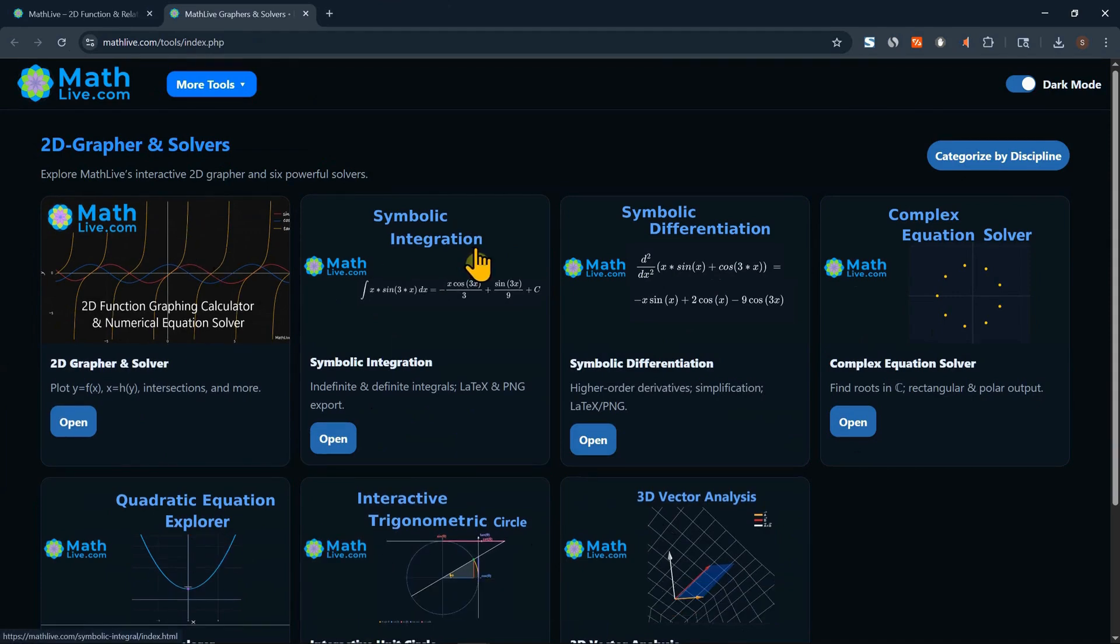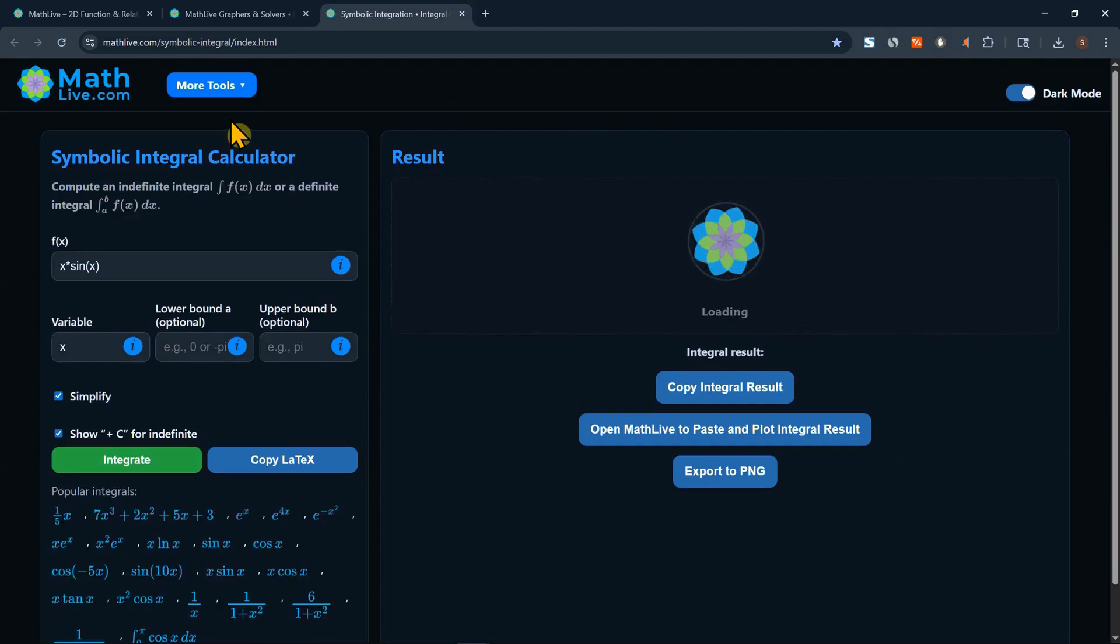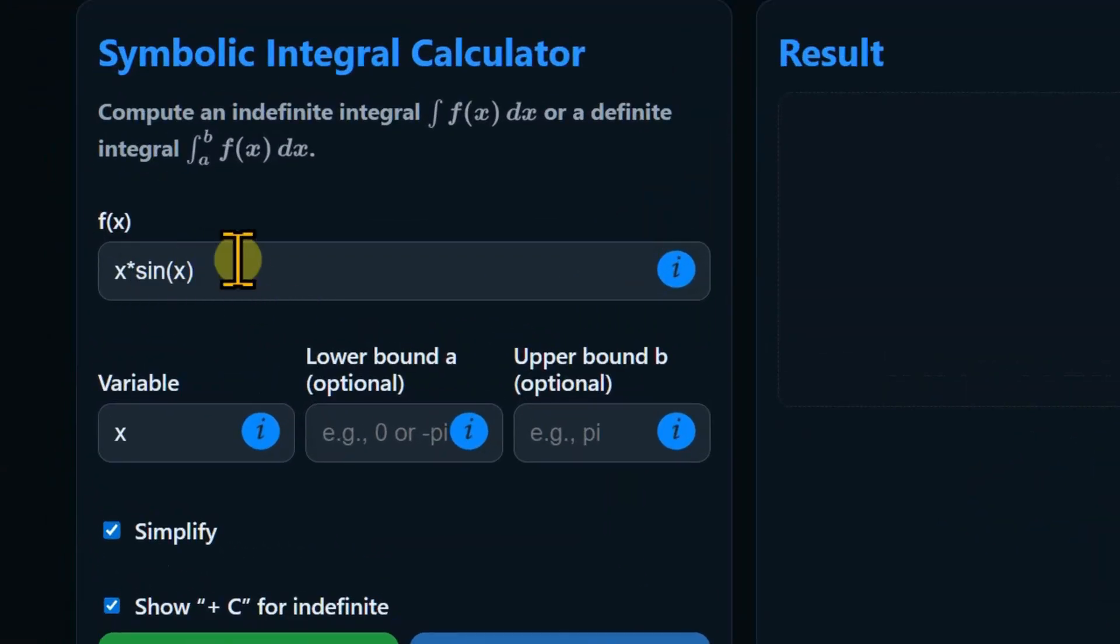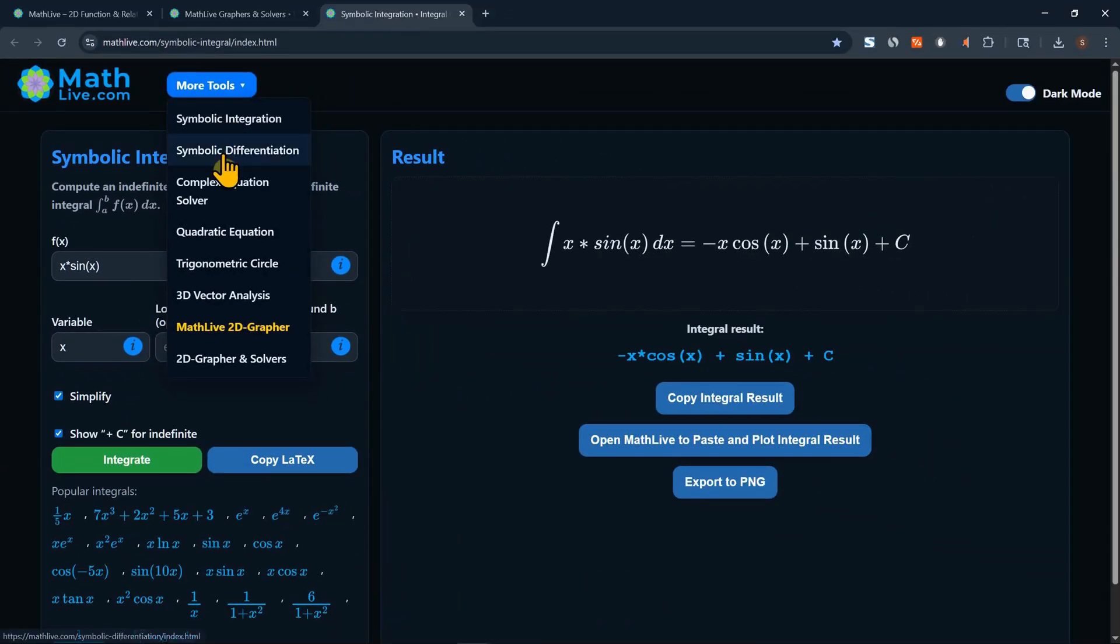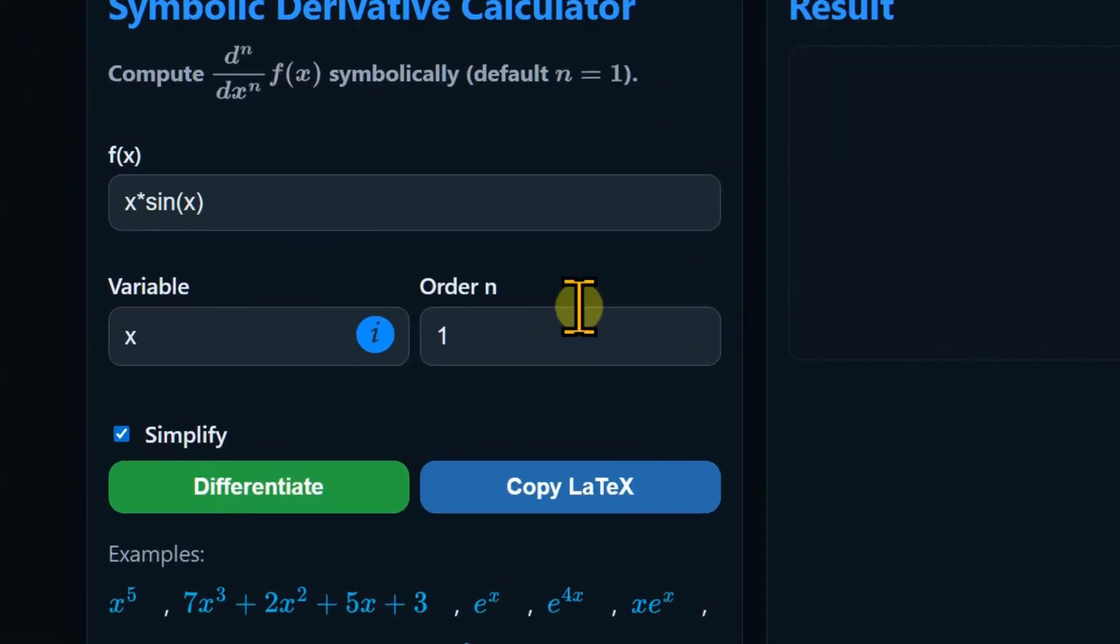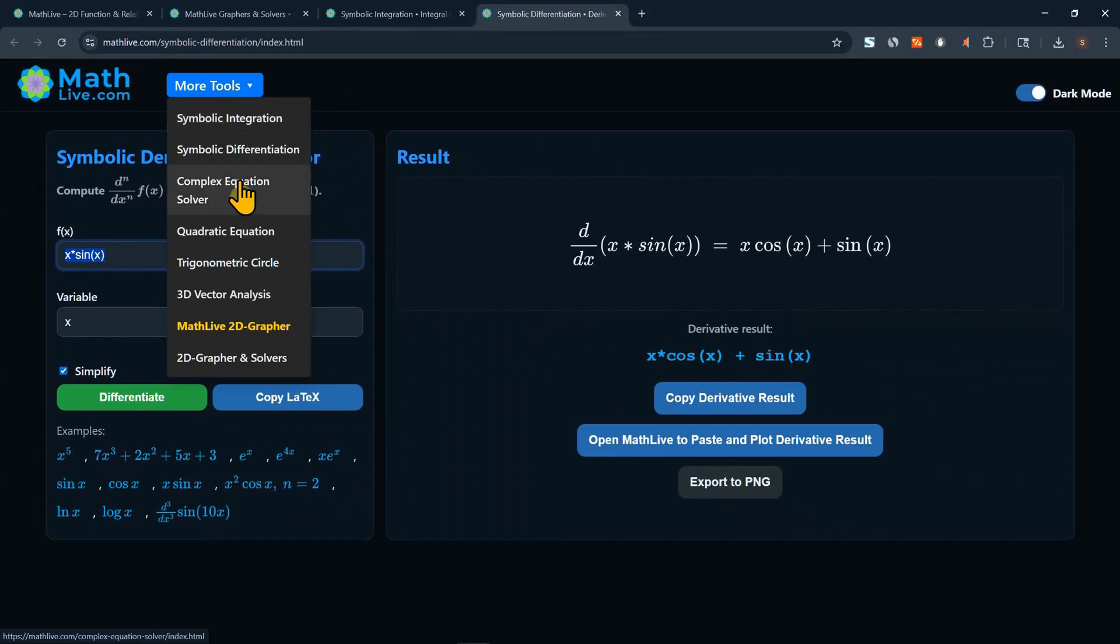So if you want to go to the symbolic integration, you could go either from here or from here. So let's go from here, from more tools. And now we are loading an integration library. And here you could enter the function that you would like to integrate. Also, you could go to symbolic differentiation. The same thing. We are loading a library. You could put a function here in this area. And you could differentiate it first order, second order, etc. We're not going to focus on these solvers now. We'll focus only on the grapher.